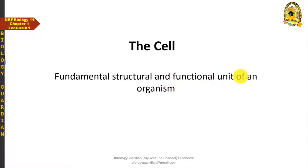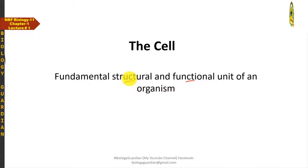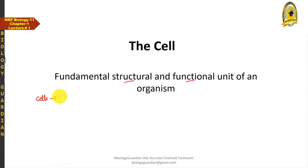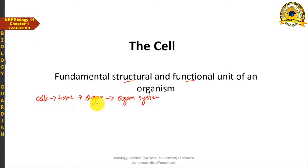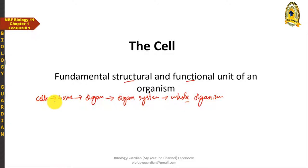Students, you know that the cell is a fundamental structural and functional unit of an organism. Why is cell called a structural unit? This question is often asked. The reason cell is called a structural unit is that cells combine to form tissues, tissues form organs, organs form organ systems, and organ systems ultimately form the complete or whole organism. Therefore, cell is called the fundamental structural unit of an organism.